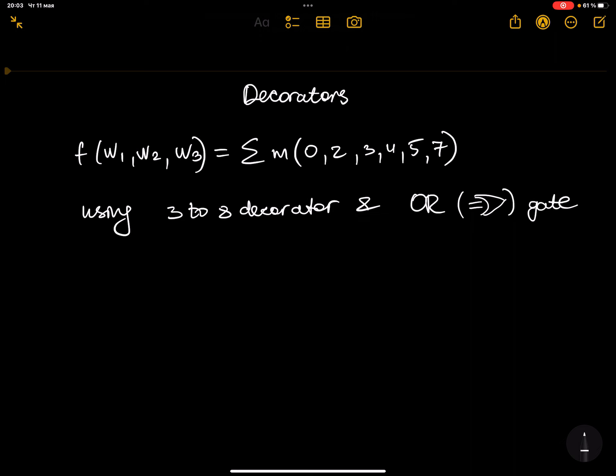Let's start analyzing problems. The very first problem is related to decoders. Consider you're given a function with three inputs and you're given the minterms. Your task is to implement this function using a 3-to-8 decoder and an OR gate. First of all, you have to understand what a decoder is.